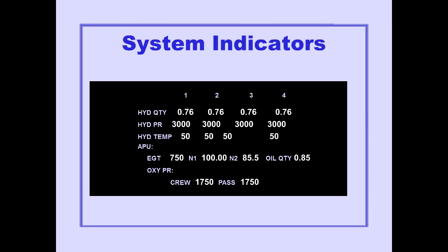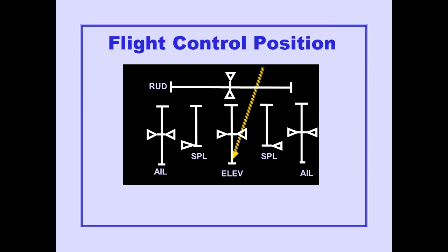System indicators are displayed in the upper half of the status display. Flight control positions for rudder, elevator, aileron, and spoiler positions are shown on the status display.